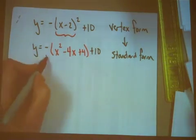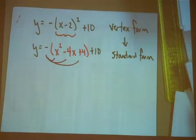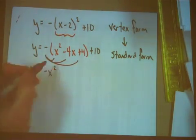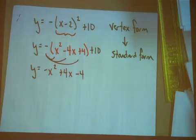Now we need to distribute that invisible negative 1 through the trinomial. This is the step many students forget.